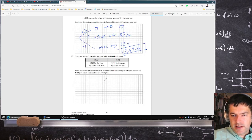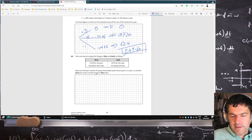There are two price plans: Silver and Gold. €420 for the year, pay €6 for each class. €670 for the year, all classes are free. Work out the least number of classes that you'd have to go to so that the gold plan would cost less than the silver plan.